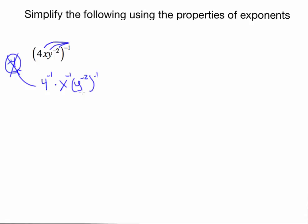Notice we don't have another side of the fraction here. What might help is to not write this just as 4 to the negative 1 times x to the negative 1 times y to the negative 2 to the negative 1 by itself — but we can write this whole quantity over 1, because taking something and dividing it by 1 doesn't change it. That helps because now anything that has a negative exponent — this 4 to the negative 1 and this x to the negative 1 — I can move those to the other side.